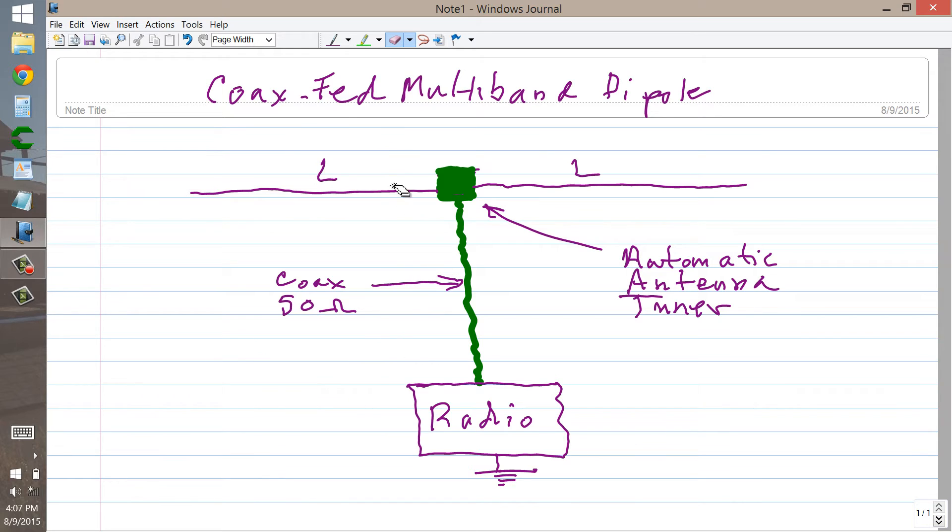One possibility though is a remote antenna tuner. An automatic antenna tuner located where the coaxial cable feeds the dipole. Then you just make these links L as long as you can for your property. Place that thing at the center. Run whatever necessary power cables you have to to go up from the radio to the automatic tuner. Now I know that my particular radio, which is an IC746 Pro.